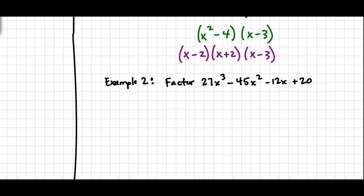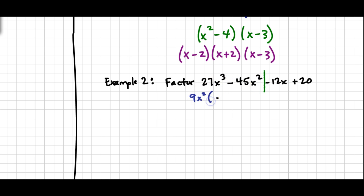Let's try another example. Again, we visually cut the polynomial in half and find the GCF of the first two pieces and the last two pieces. For 27x³ and 45x², the greatest common factor is 9x². Then: 9x² times what gives 27x³? That's 3x. And 9x² times what gives 45x²? That's 5. So we have 9x²(3x minus 5) for the first half. We want whatever's inside the parentheses on the second half to mirror 3x minus 5.